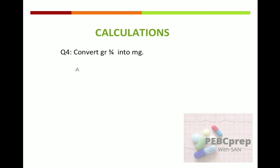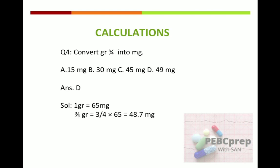Next question: convert grain 3/4 into mg. Options: A) 15 mg, B) 30 mg, C) 45 mg, D) 49 mg. Answer is D. Since 1 grain equals 65 mg, 3/4 multiplied by 65 equals 48.75 mg, which is closest to 49 mg — option D. Similarly, you will not get the exact number, but you have to choose the option which comes closest to your calculated value.